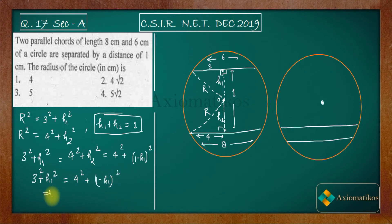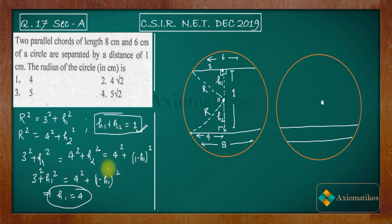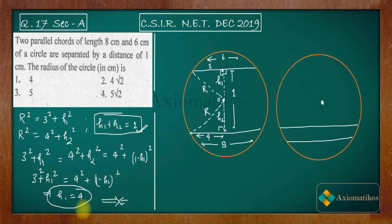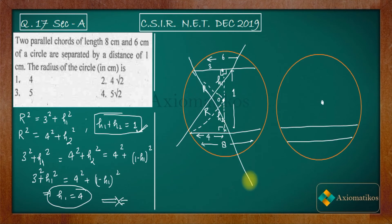Solving this equation gives h1 = 4. But can h1 be 4? No — it is a contradiction. Because h1 and h2 are both positive distances and their sum must equal 1, having h1 = 4 would make h2 negative, which is impossible for a length. Therefore, Case 1 — where the center lies between the chords — is not possible at all. This is the incorrect configuration.